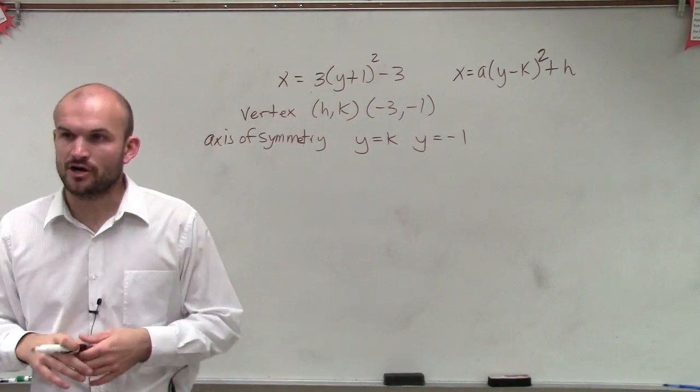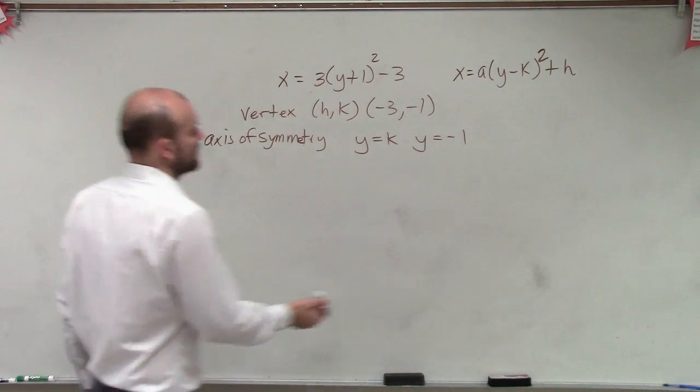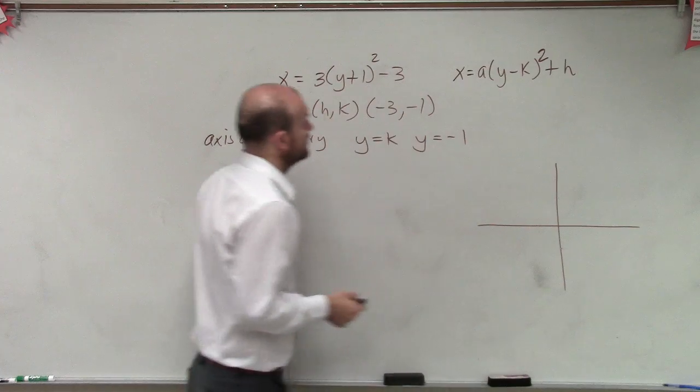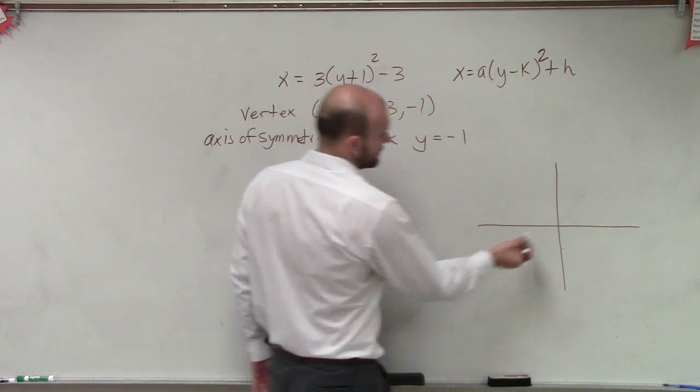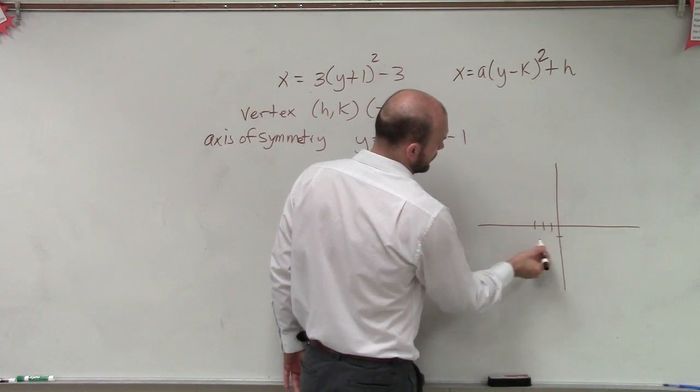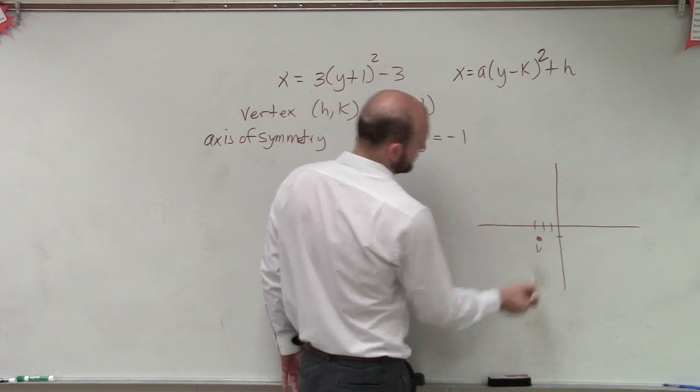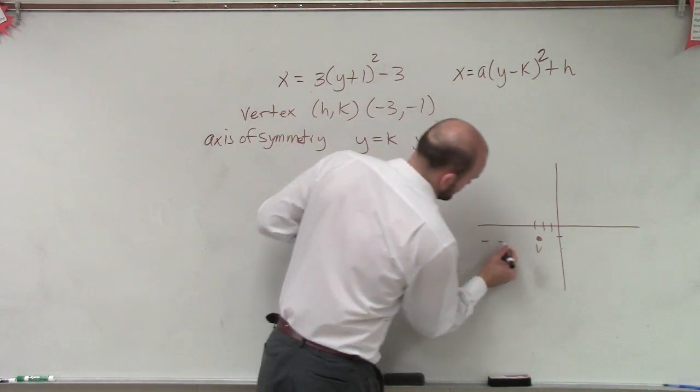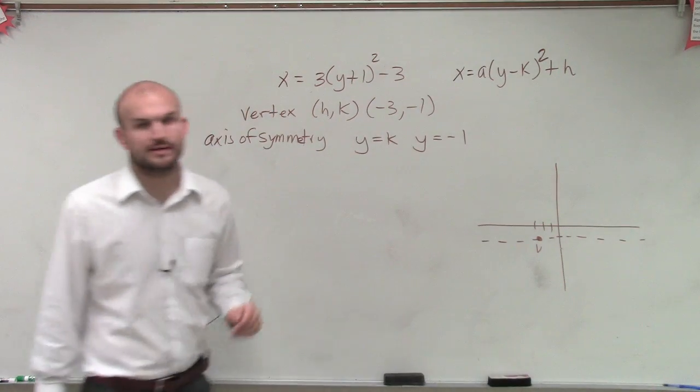So let's go and plot this so far, just to go and see what we exactly have. So right now, I have a graph. It's going over negative 3, down 1. 1, 2, 3, down 1. That's my vertex. It has axis of symmetry at y equals negative 1.